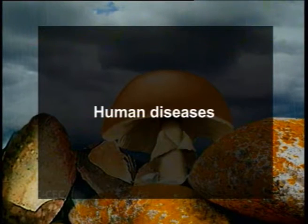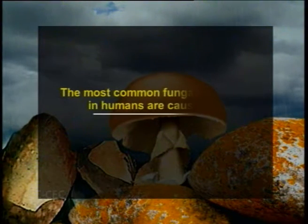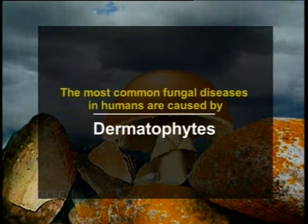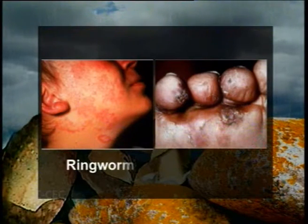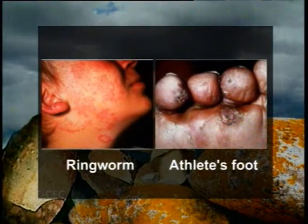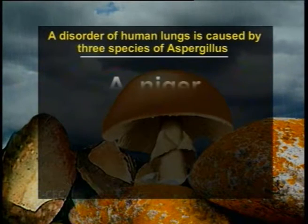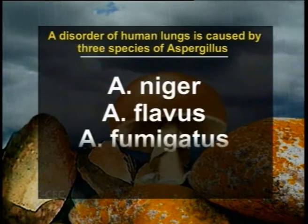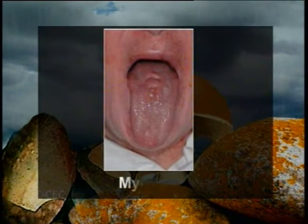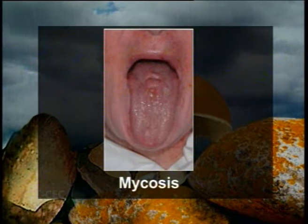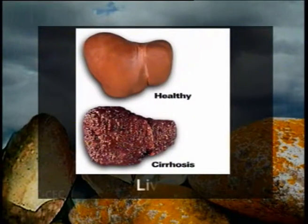Fungi are also known to cause several diseases in humans. The most common fungal diseases in humans are caused by dermatophytes — fungi which infect the skin — for example, ringworm and athlete's foot, caused by the fungus Trichophyton. Fungi also cause many disorders of the respiratory tract, kidney, liver, eye, and nose. For example, aspergillosis, a disorder of the lungs, is caused by three species: Aspergillus niger, Aspergillus flavus, and Aspergillus fumigatus. Mycosis is a serious disease of immunocompromised persons. The accidental intake of aflatoxin, a mycotoxin produced by Aspergillus, may cause liver cirrhosis and cancer.